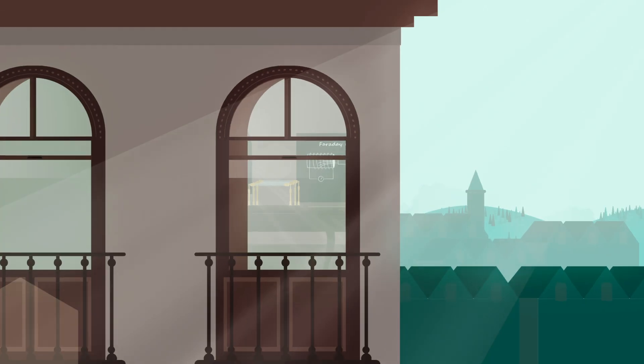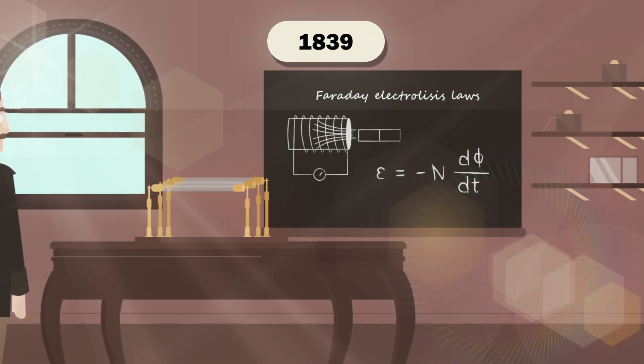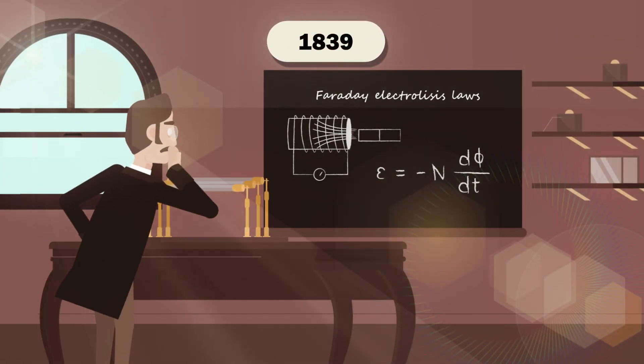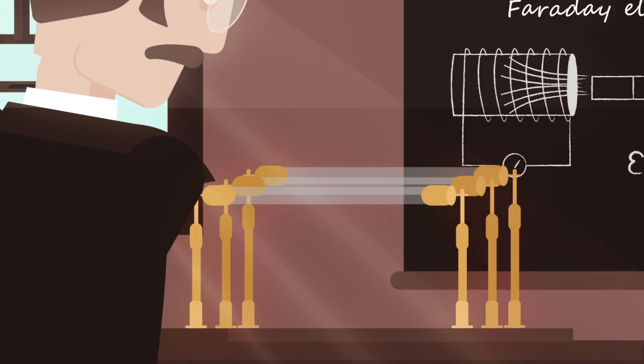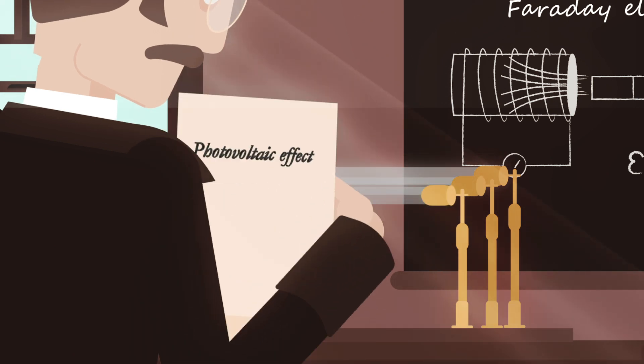However, it was not until 1839 that French physicist Edmond Becquerel, while studying Faraday, observed that exposing metal electrodes to light produced small electrical currents.